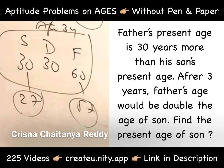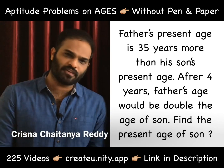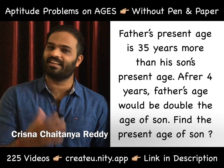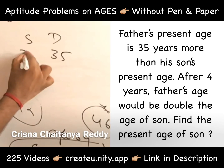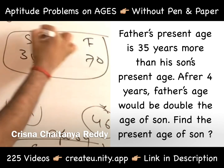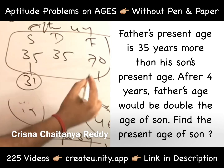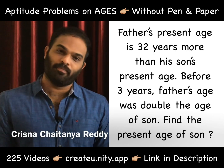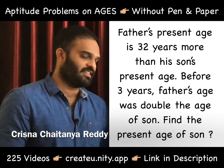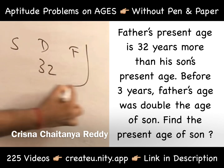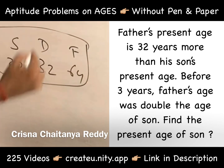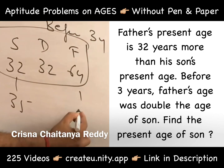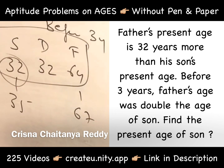Another example: father's present age is 35 years more than his son; after four years father's age is double the age of son — present age of son? 31. Gap is 35; son becomes 35, father becomes 70, but after four years, so today son is 31 and father is 66. Now: father's present age is 32 years more than his son; before three years father was double the age of son — present age of son? The difference is 32; son becomes 32, father becomes 64, but this happened before three years, so today son is 35 and father is 67.